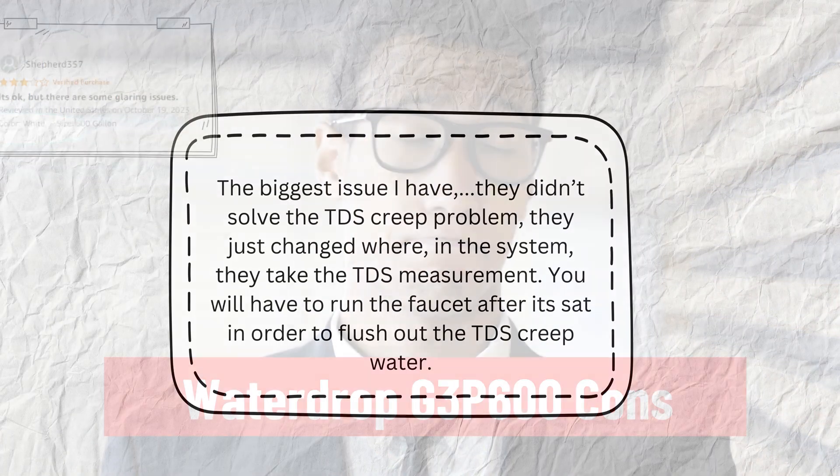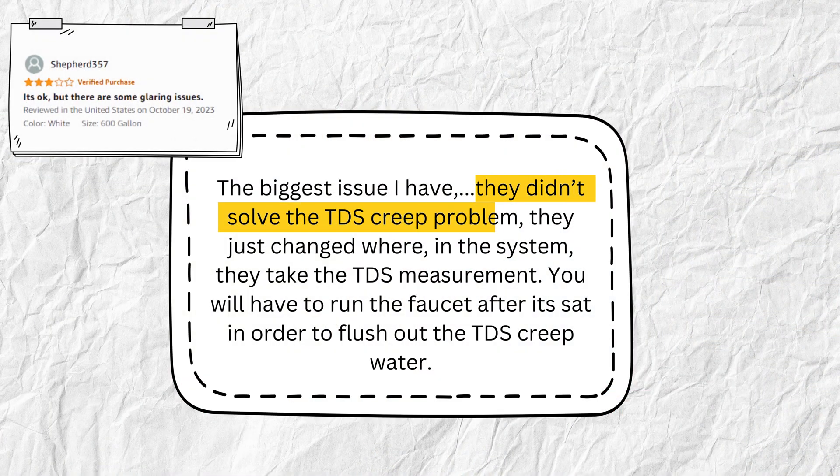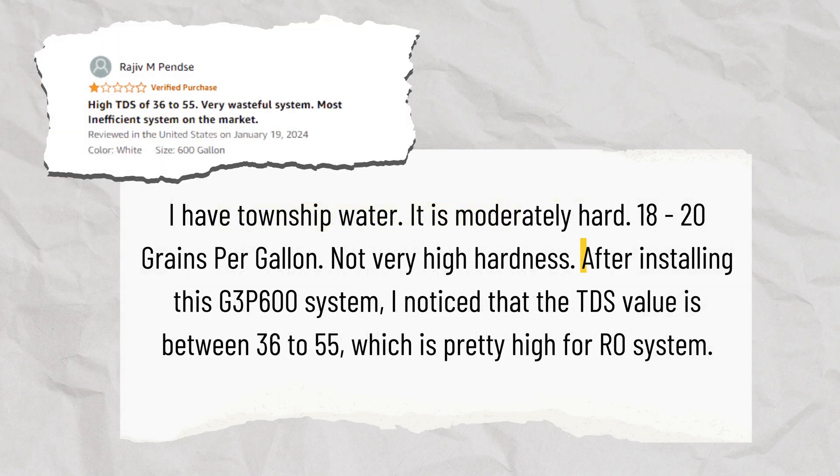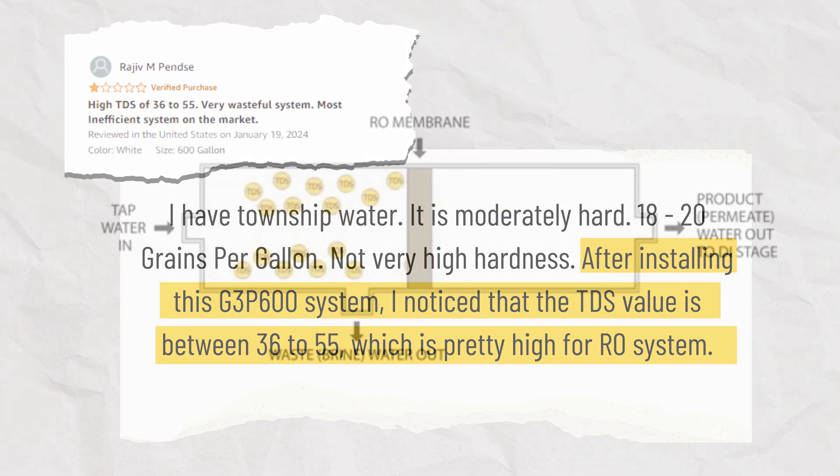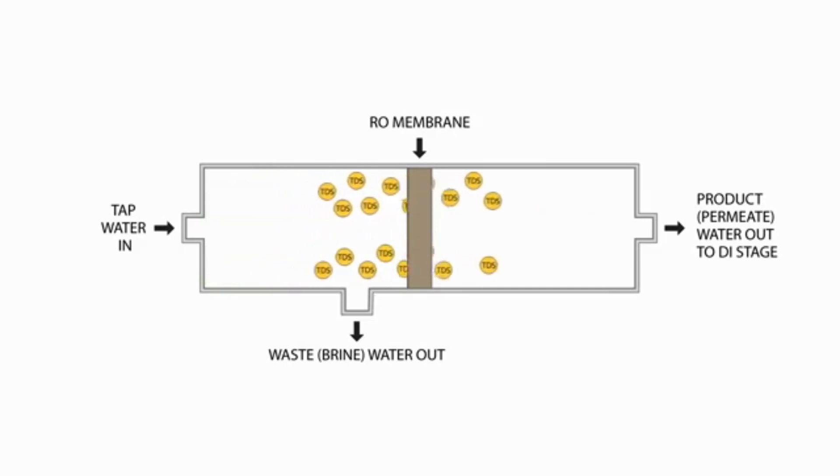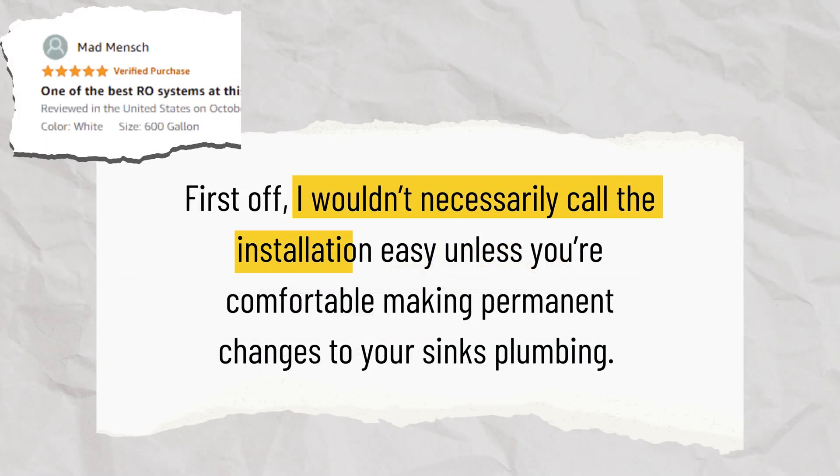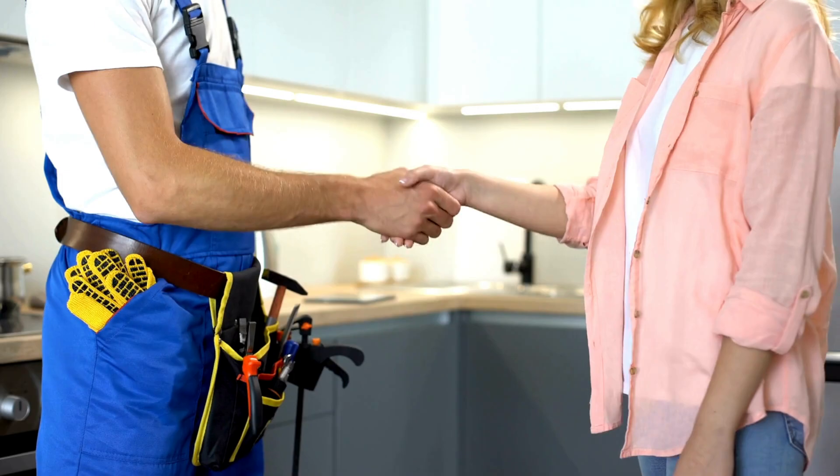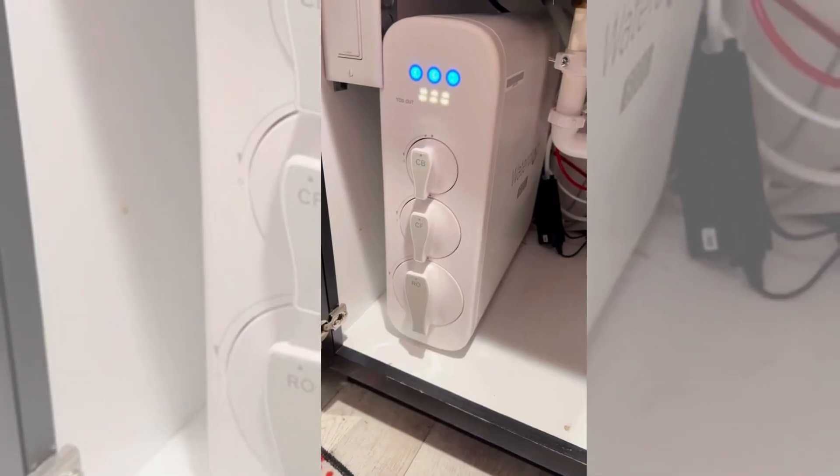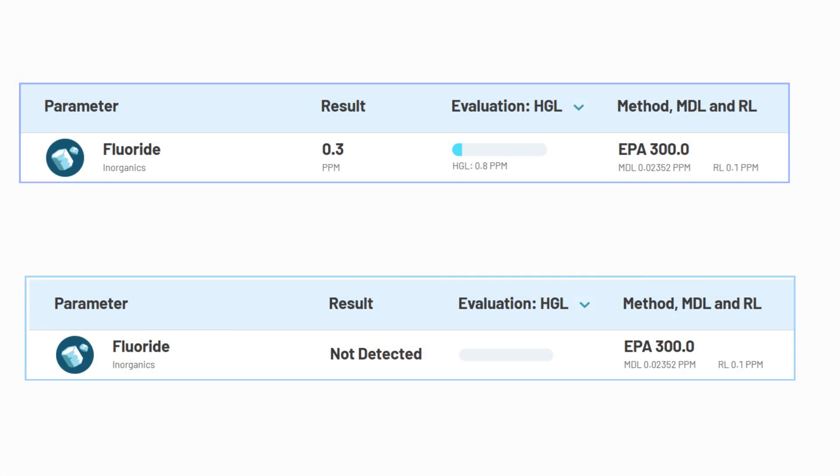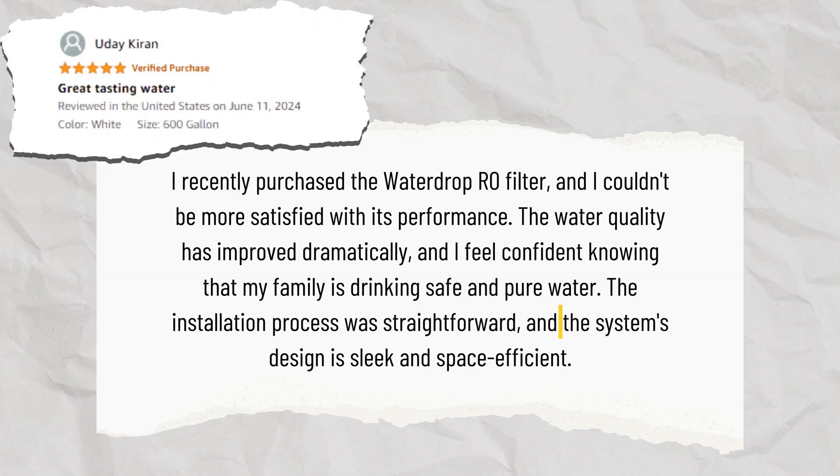Coming to its cons, its tankless design has the potential for a TDS creep issue. TDS creep refers to the slow rise in TDS levels in purified water caused by the membrane's partial failure to eliminate all contaminants. Also, it takes some effort to install as it's an under-sink and not a pitcher. But overall, the WaterDrop G3 system is excellent for those who want to remove fluoride without much hassle of space and maintenance.